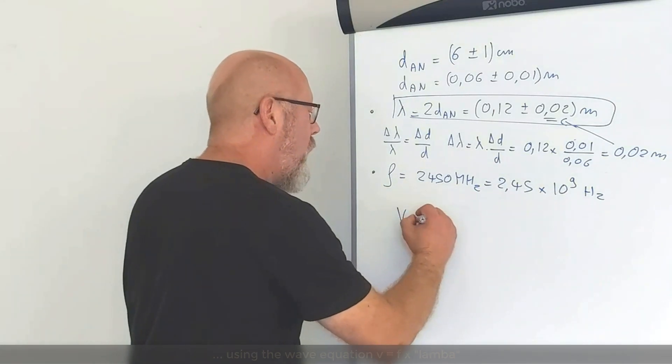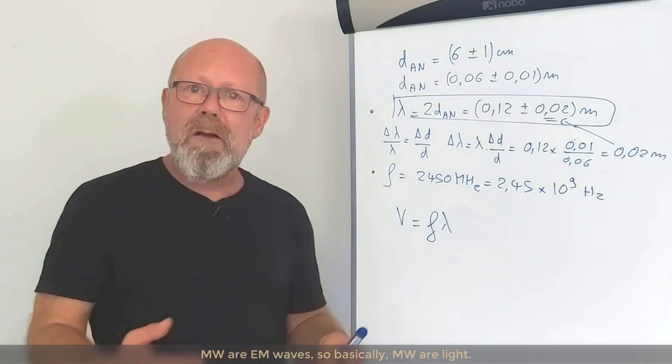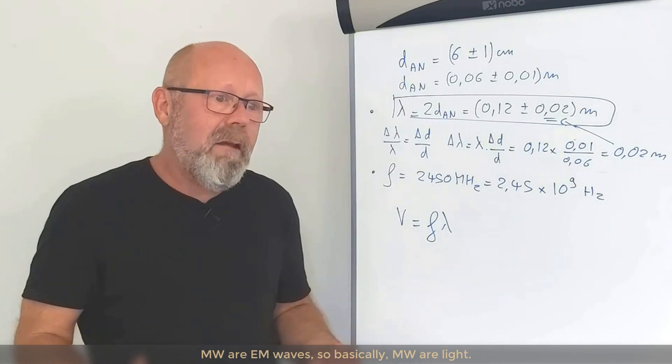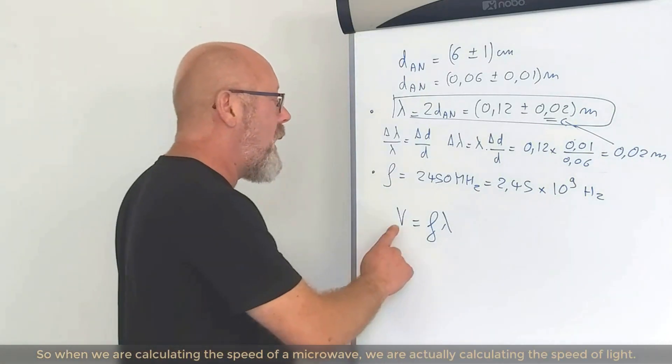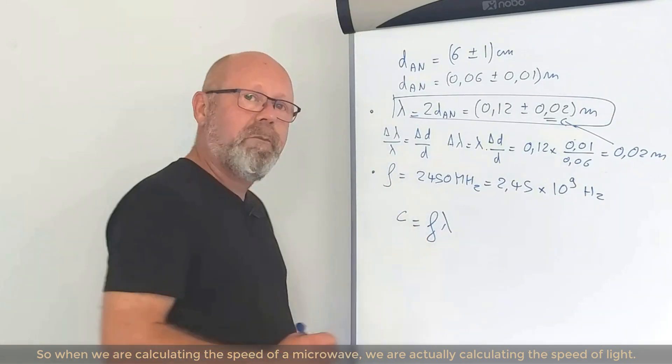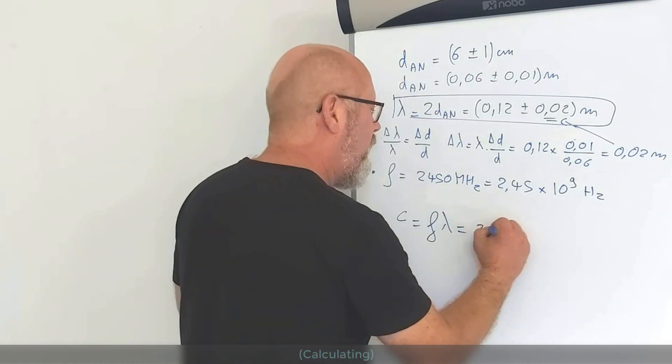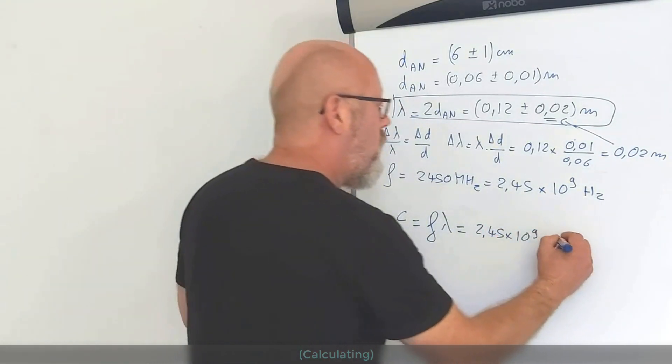Using the wave equation v equals f lambda. Microwaves are electromagnetic waves. So, basically, microwaves are light. So, when we calculate the speed of the microwave, we're actually calculating the speed of light. So, frequency, 2.45 by 10 to the 9. Wavelength, 0.12. Let me find my calculator.